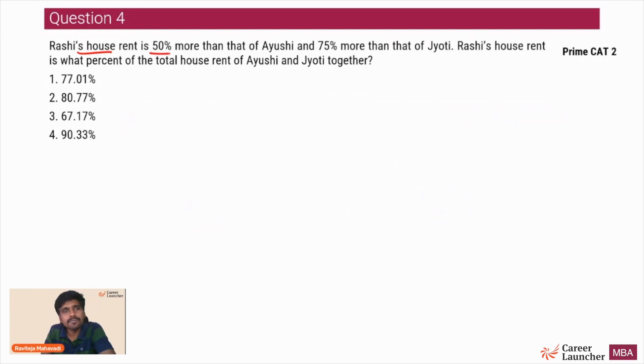Question 4. Rashi's house rent is 50% more than that of Ayushi and 75% more than that of Jyoti. So Rashi upon Ayushi - Rashi is 50% more than Ayushi - so Rashi upon Ayushi is 3 by 2, which translates to 150 upon 100. And Rashi's house rent is 75% more than that of Jyoti, so Rashi upon Jyoti is equal to 175 upon 100, which is 7 by 4. So if you look at the simple ratios over here, you'll get Ayushi is to Rashi is to Jyoti.